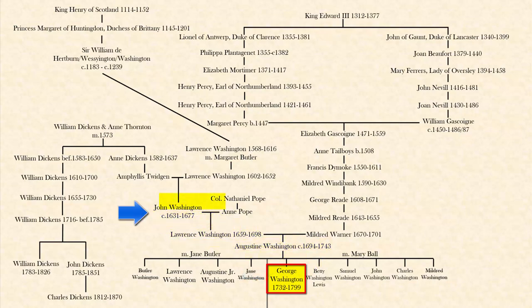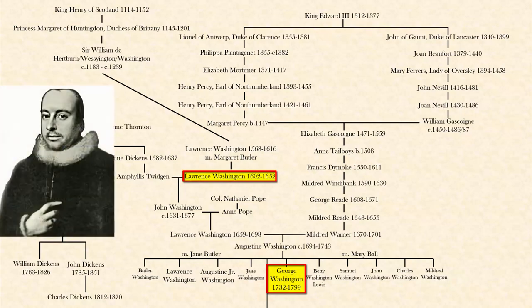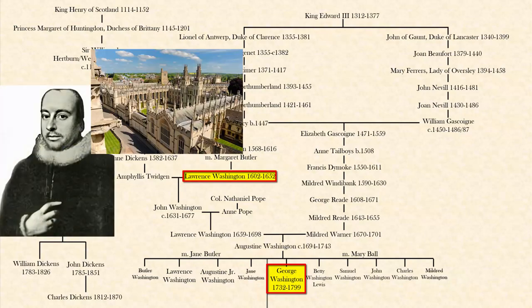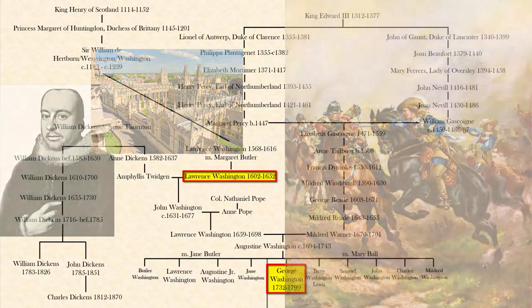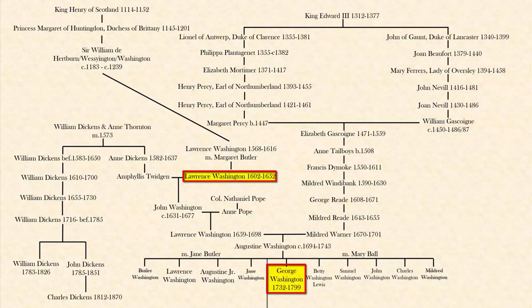We're going to start off with George's great-great-grandfather, Lawrence Washington, 1602 to 1652. Lawrence earned a college education at Oxford in a four-year program from 1619 to 1623, completing his Bachelor's of Arts and then going on to get his Master's. He eventually served as a reverend, but when the English Civil War began in 1642, he was fired due to his sympathies with the British Crown and died in poverty ten years later at age 50. What's interesting is that Lawrence married Amphyllis Twigdon, and her mother was Anne Dickens. It turns out Anne's brother is William, who is the direct ancestor to Charles Dickens the writer in the 1800s.